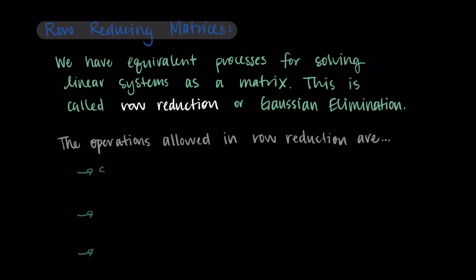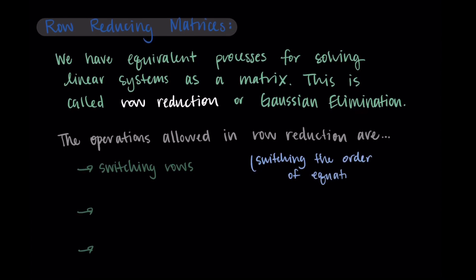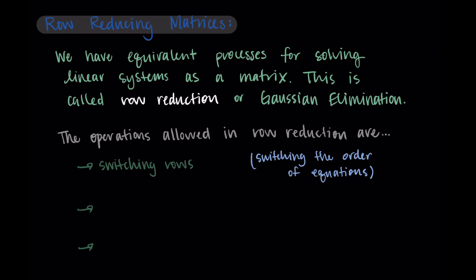So the first of these operations is switching rows. So we can take one row of the matrix and switch it with another. This is equivalent to just switching the order of the equations. It makes sense that we could do this in a system, you can write the equations in whatever order you want, it doesn't matter which one's first in the list or next in the list.